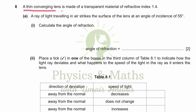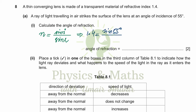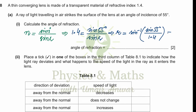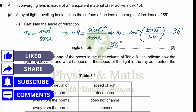A thin converging lens is made of a transparent material of refractive index 1.4. A ray of light traveling in air strikes the surface of the lens at an angle of incidence of 55 degrees. Calculate the angle of refraction. We are familiar with the formula that refractive index n is equal to sine i upon sine r. The value of refractive index is 1.4 and the angle of incidence is 55 degrees, so the angle of refraction equals sine inverse of (sine 55 divided by 1.4), and the answer is 36 degrees.